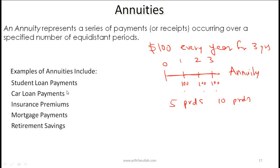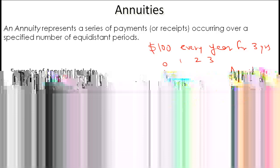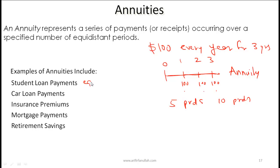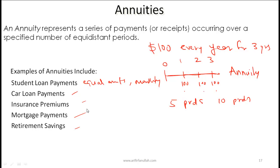Examples of annuities include student loans — typically repaid with equal monthly amounts — car loan payments, insurance premiums, mortgage payments, and retirement savings. All of these typically represent annuities.